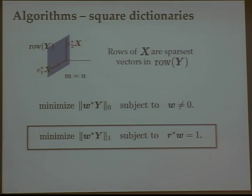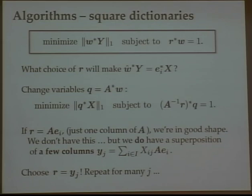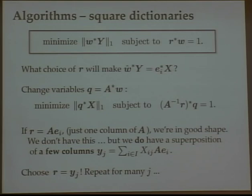In the over-complete case, instead of looking for sparse vectors in the known subspace, I would be looking for sparse vectors in some extension of this subspace. The row space of Y is a lower-dimensional subspace; my rows of X would live in some higher-dimensional subspace containing it. Finding this higher-dimensional subspace is a more challenging problem. In the complete case — good for uniqueness analysis — what are the implications for algorithms? Can we use this property to get a global algorithm?